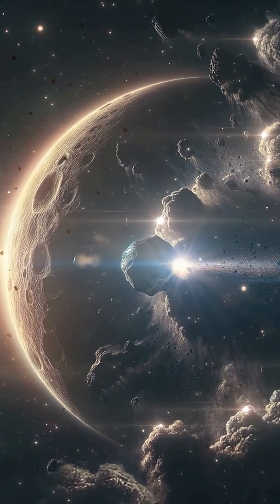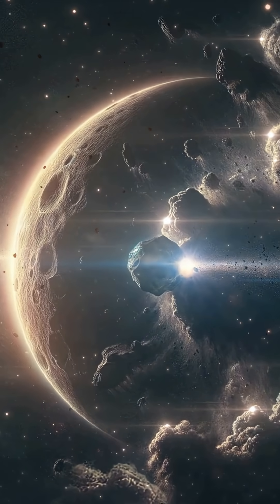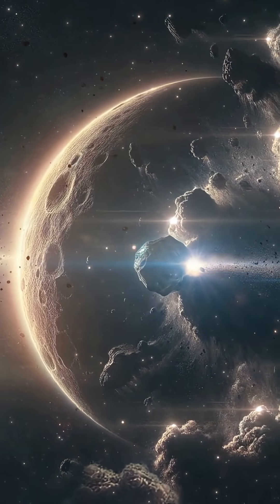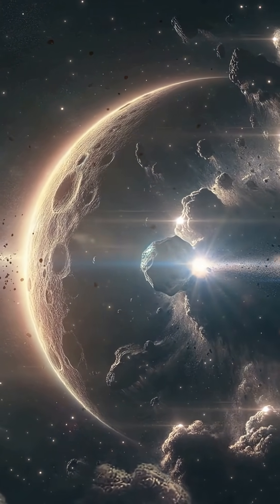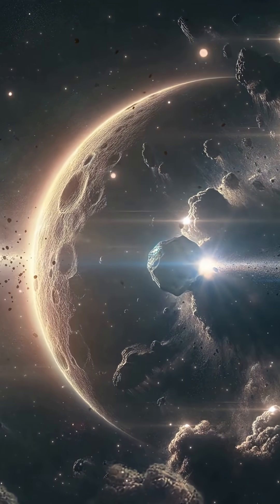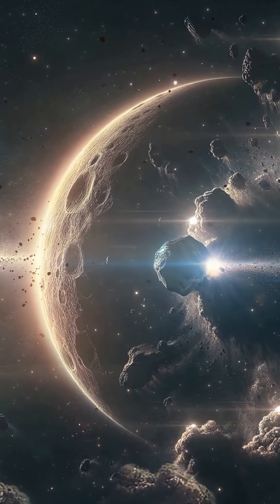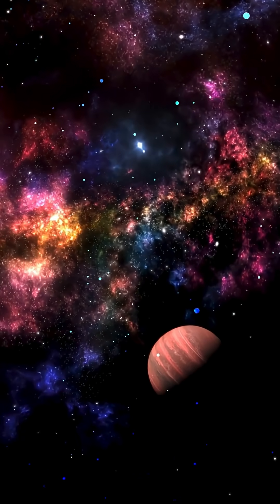The event shows one of the most likely outcomes for Earth as our sun ages. In about a billion years, our star will begin to swell, potentially engulfing the inner planets and forcing the outer ones, including Earth if it survives, to move in wider orbits.